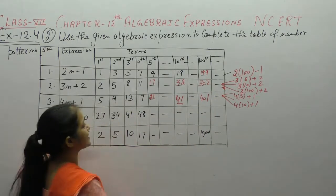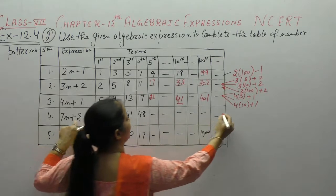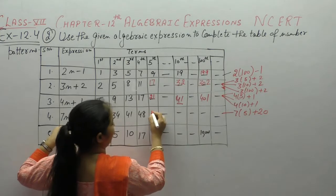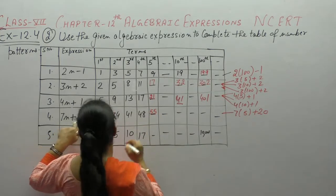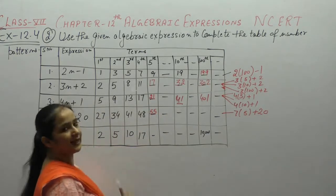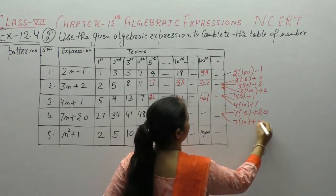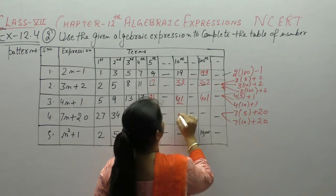Now, next one, n की value 5. 7 into 5, 35 plus 20, 55. n की value 10, 7 into 10, 70 plus 20, 90.